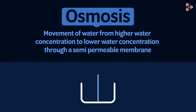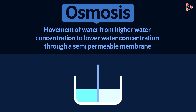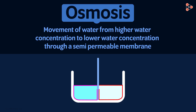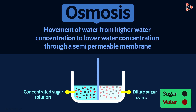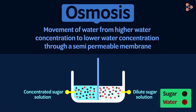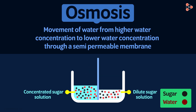Let's say we have a container which is partitioned by a semi-permeable membrane. We add sugar solutions on both sides; however, the concentration of each is different. On one side we add concentrated sugar solution, while on the other side dilute sugar solution. That means the concentration of water in the dilute solution is obviously more. So, after some time, we see water molecules moving from that side of the partition to the other side. This movement will occur until the concentration of water is equalized on both sides. This is nothing but Osmosis.